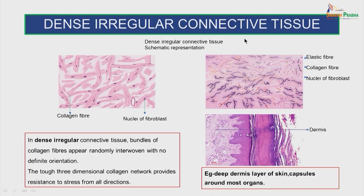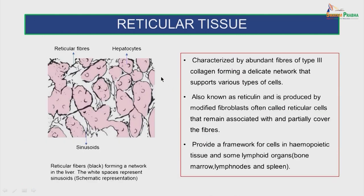In dense irregular connective tissue, the bundles of collagen fibers appear randomly interwoven with no definite orientation. The tough three-dimensional collagen network provides resistance to stress from all directions. Examples are the deep dermis layer of the skin and capsules around most organs. The reticular tissue is characterized by abundant fibers of Type III collagen forming a delicate network — also known as reticulin — produced by modified fibroblasts often called reticular cells that remain associated with and partially cover the fibers. They provide a framework for the cells in hemopoietic tissue and some lymphoid organs: bone marrow, lymph nodes and spleen. These are the reticular fibers forming a network in the liver; the white spaces represent the sinusoids.